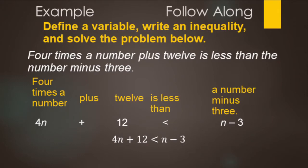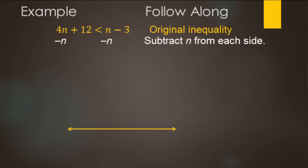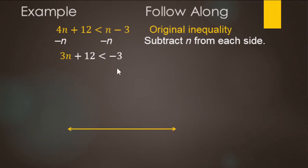Now we're going to solve. We notice we have variables on both sides of the inequality. We're going to treat this inequality just like an equal sign, except when we multiply or divide by a negative number. We want variables on one side, so we subtract the smallest coefficient — this is four and this is one — so we subtract n from both sides. On the left side, 4n minus n makes 3n, plus 12, is less than n minus n — no more n's — just negative three.